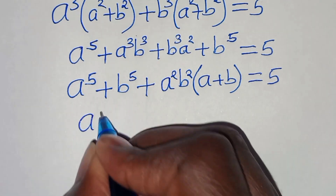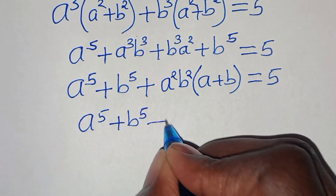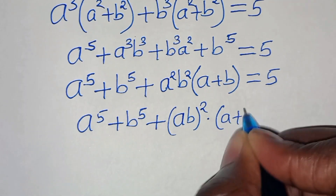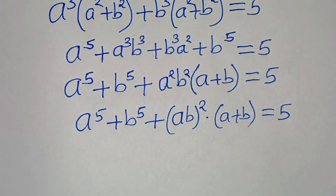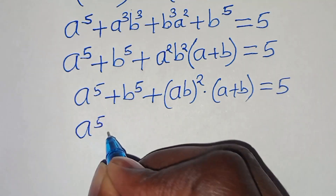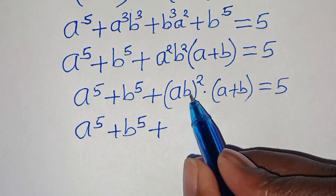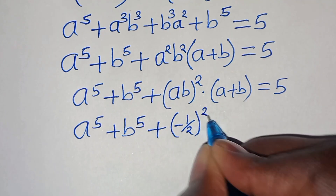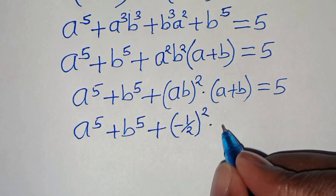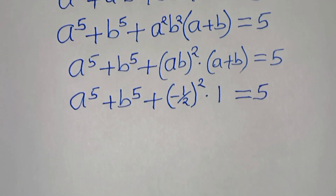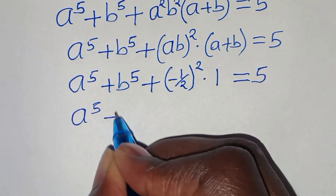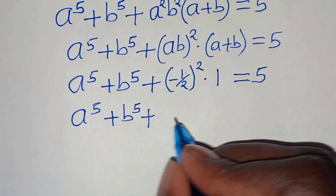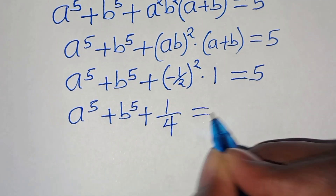So this is a to the power of five plus b to the power of five, then plus — we can express a squared b squared as ab raised to the power of two — times a plus b, equals five. So a to the fifth plus b to the fifth, plus ab which is minus one half from equation three, raised to the power of two, times a plus b which is one from equation one, equals five. Now minus one half squared is one over four, times one is one over four. So a to the fifth plus b to the fifth plus one over four equals five.